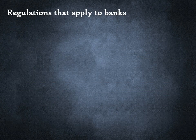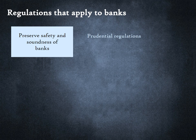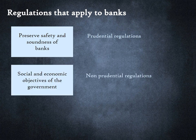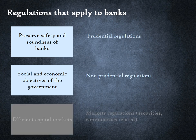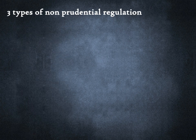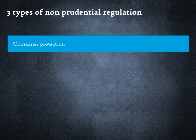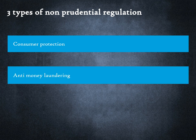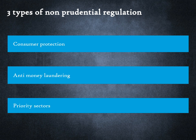This brings us to the end of the section on prudential regulations. We will now move on to non-prudential regulations, whose objective is to promote social and economic objectives set by the government. Market regulations are outside the scope of this course. Non-prudential regulation of banks globally caters to three common objectives: first, consumer protection — protecting consumers from fraudulent or unfair business practices; second, prevention of money laundering; and third, direction of credit to sectors that the government deems to be important, for example small business, higher education, or housing.